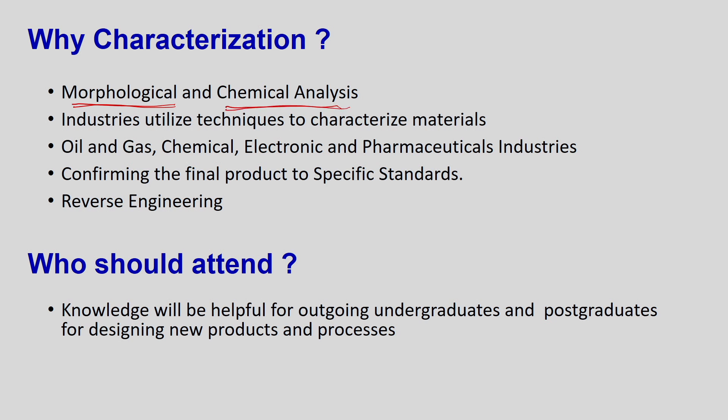Why is this useful for chemical engineers? Because chemical engineering involves industries that utilize techniques to characterize such materials — especially in oil and gas, chemical industries, electronic industries, and pharmaceutical industries. In oil and gas, for example, precursor materials or finished products need to be characterized to confirm they meet a certain standard. Industries must conform to standards like ISO standards or EPA pollution standards, which specify how much pollutant can be emitted.